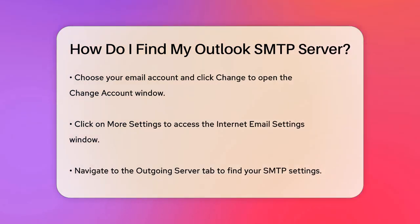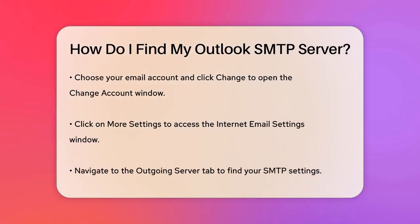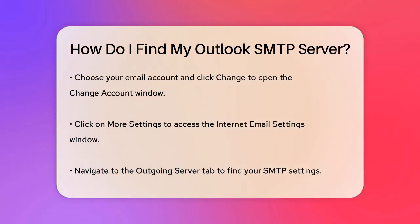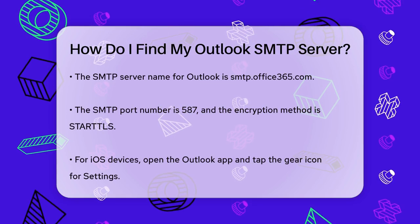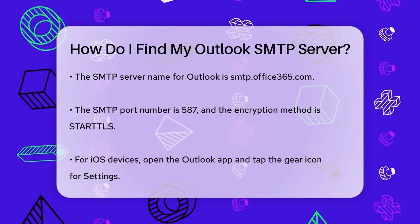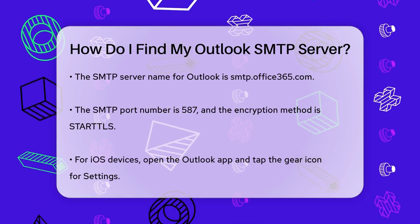For Outlook, the SMTP server name is smtp.office365.com, the SMTP port number is 587, and the encryption method is StartTLS. These settings allow you to send emails from your Outlook account using another email client.